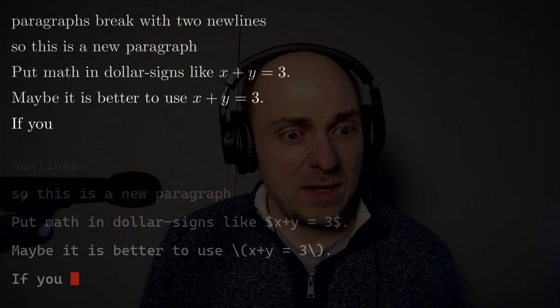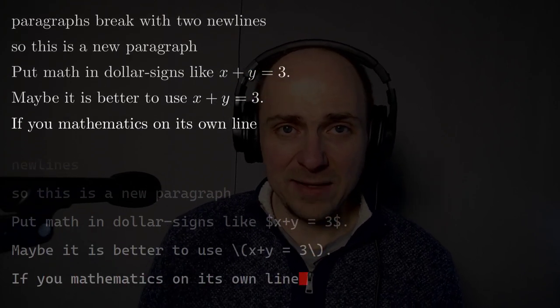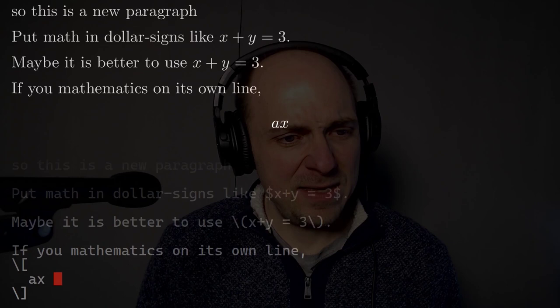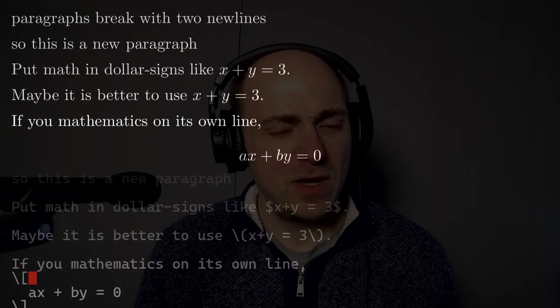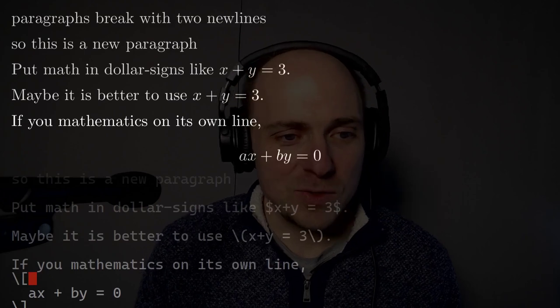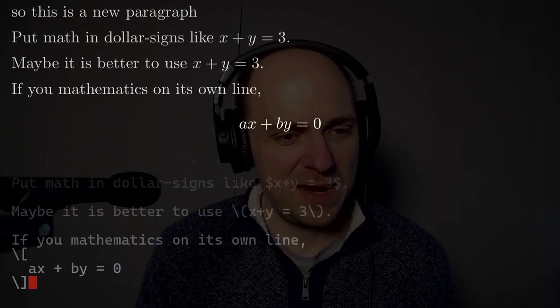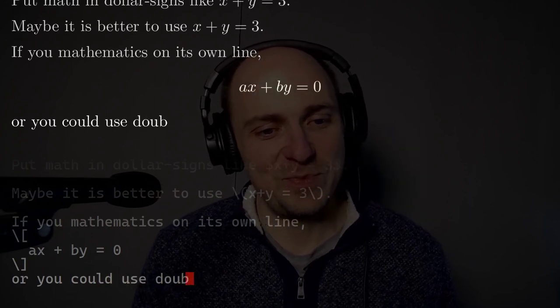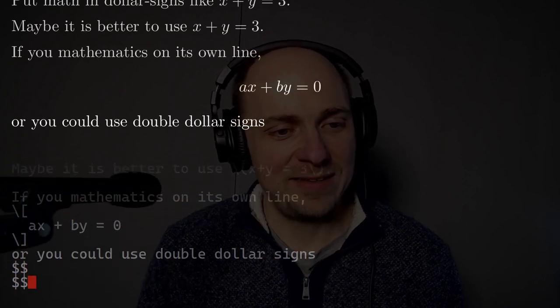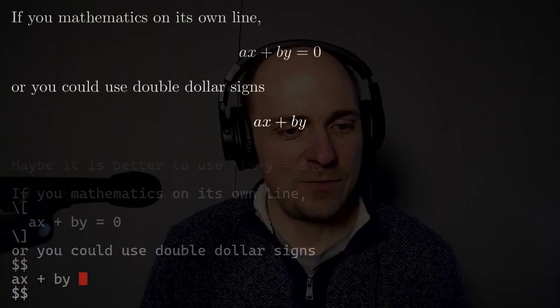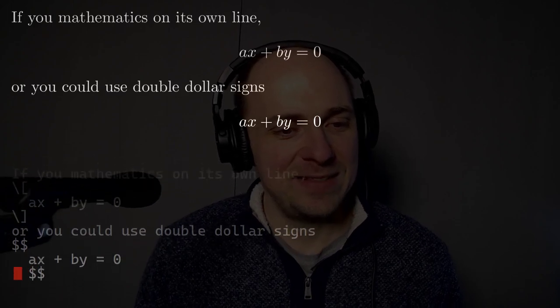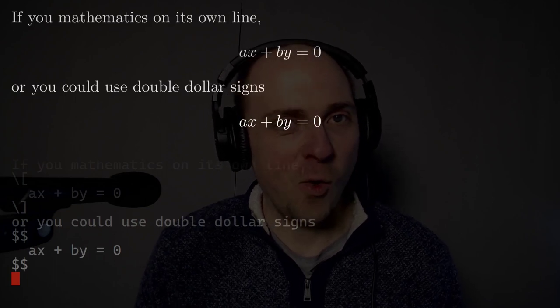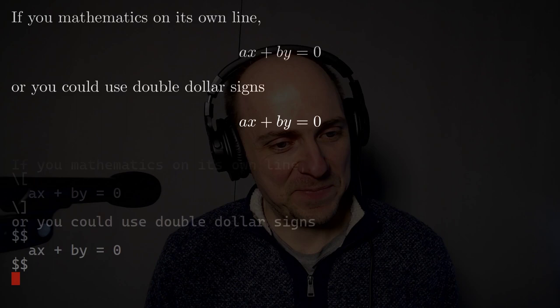If you want mathematics on its own line, a displayed equation, you can do something like this, where I put slash open square bracket and then slash close square bracket there. And that puts the mathematics on its own line. Or you could use double dollar signs, like this. But again, that suffers from the same danger, that double dollar sign is both the beginning and the ending delimiter, so maybe slash open square bracket and slash close square bracket a little bit safer.